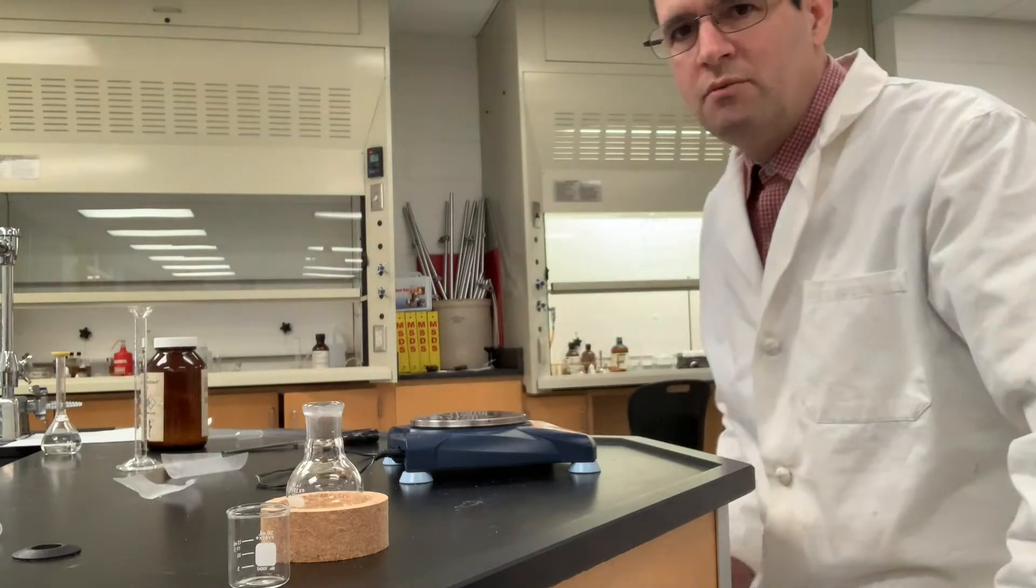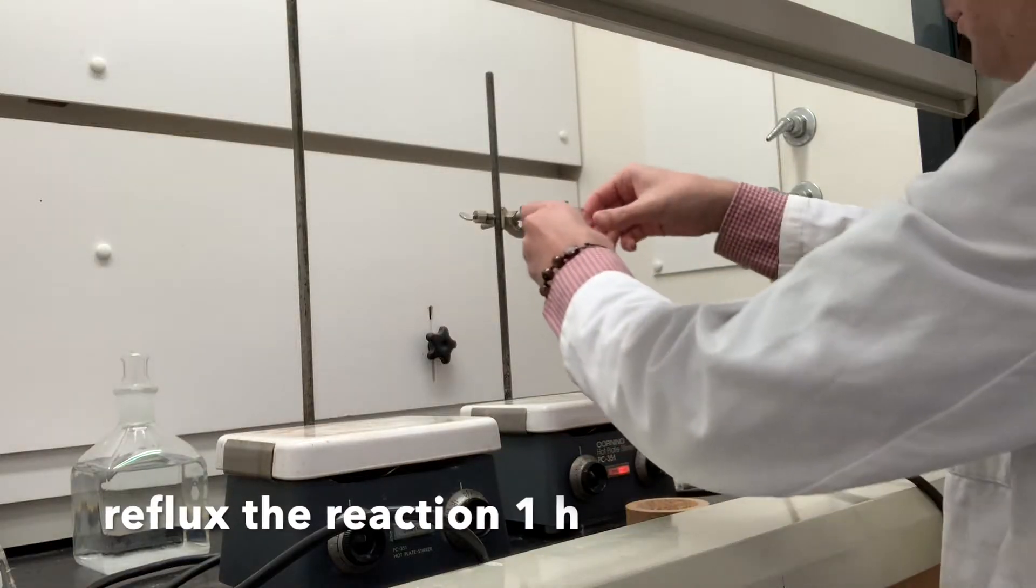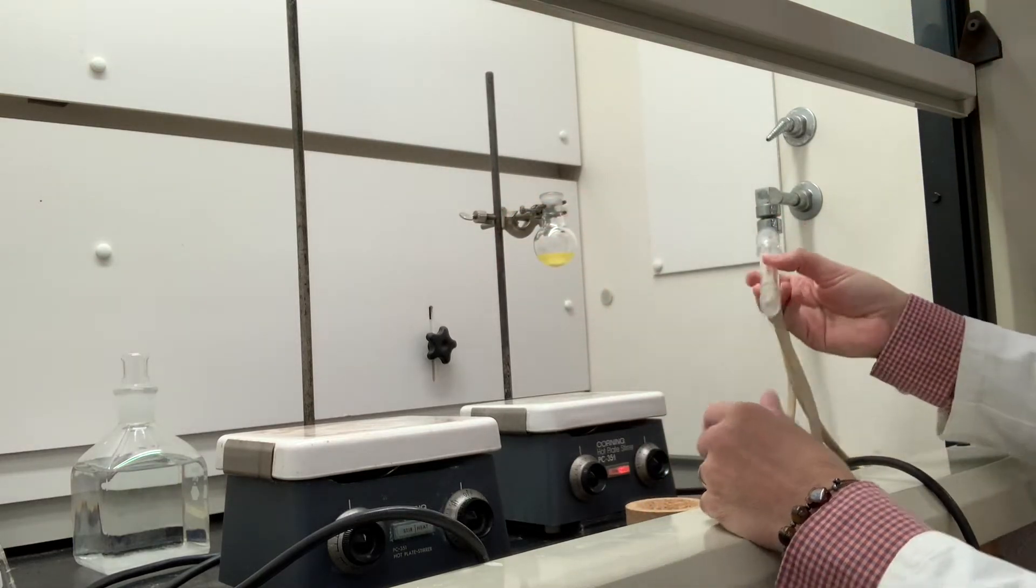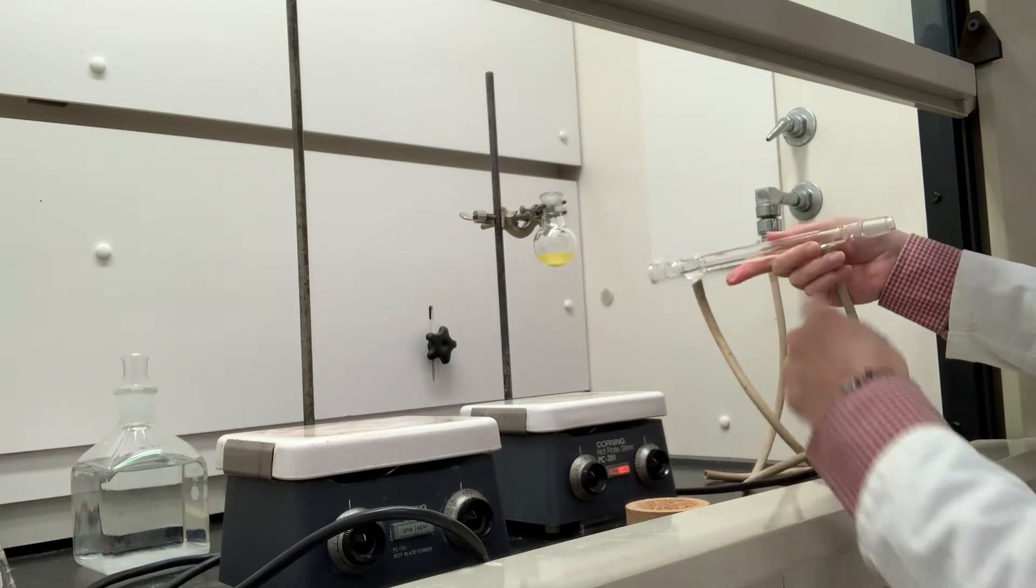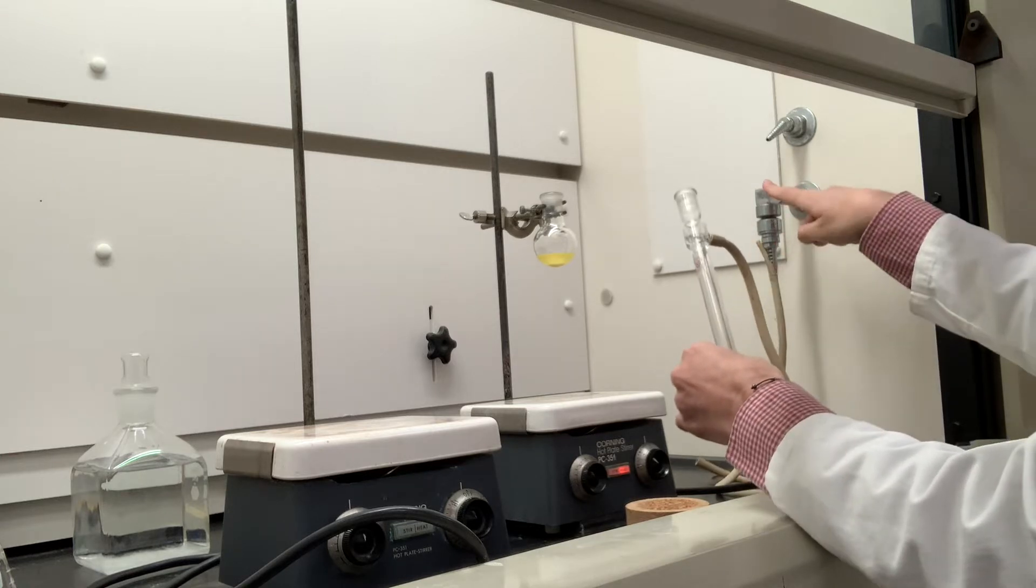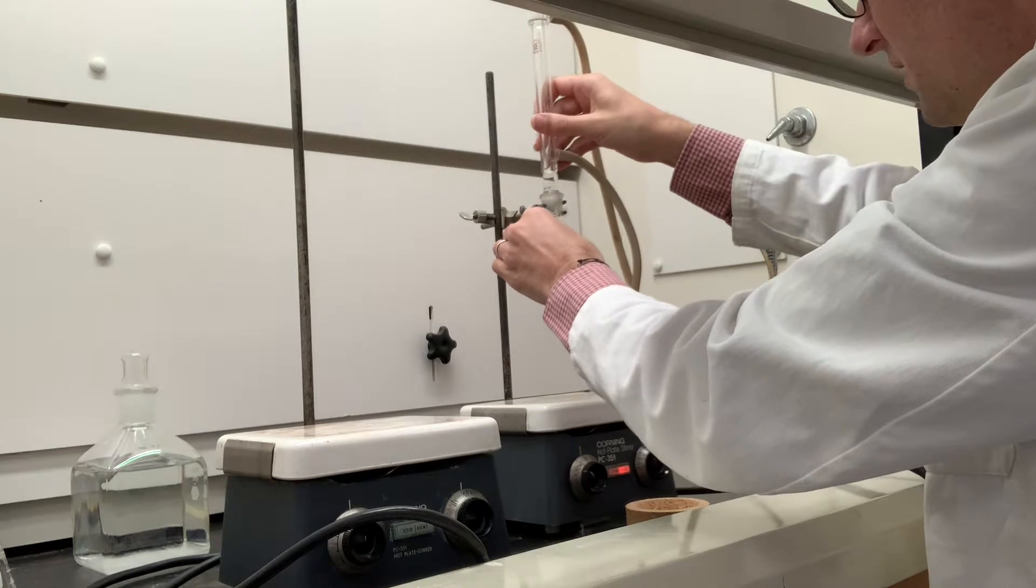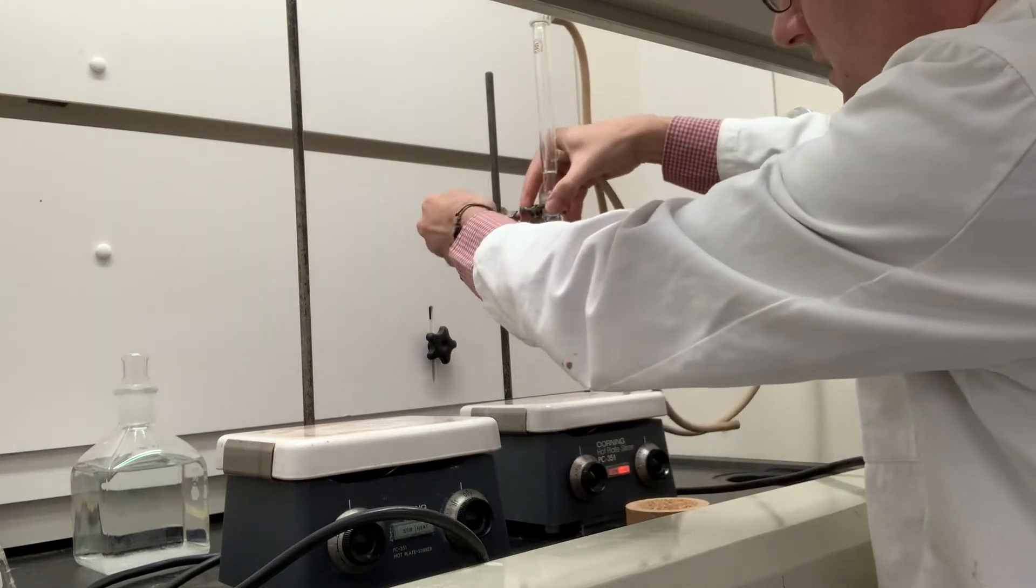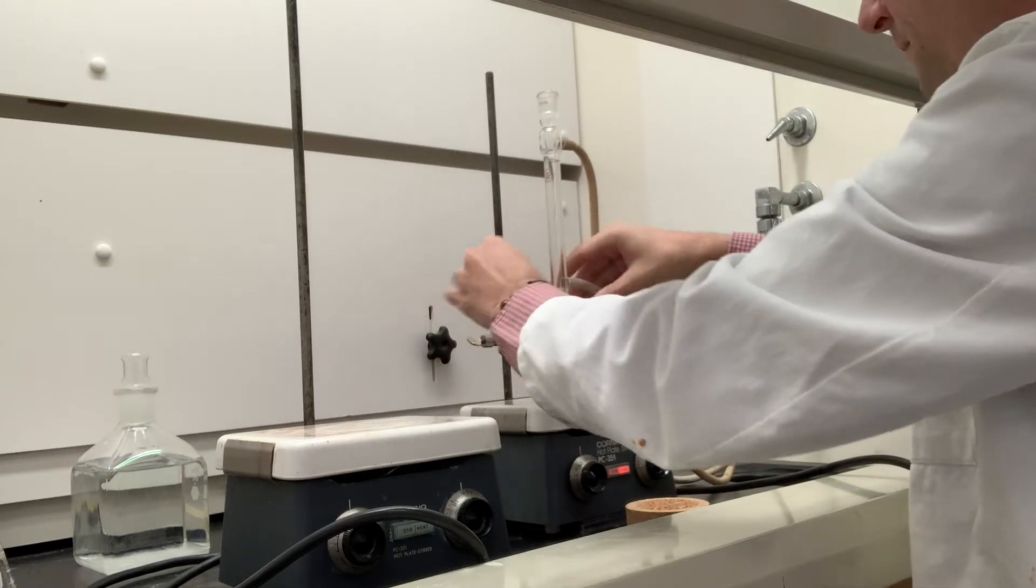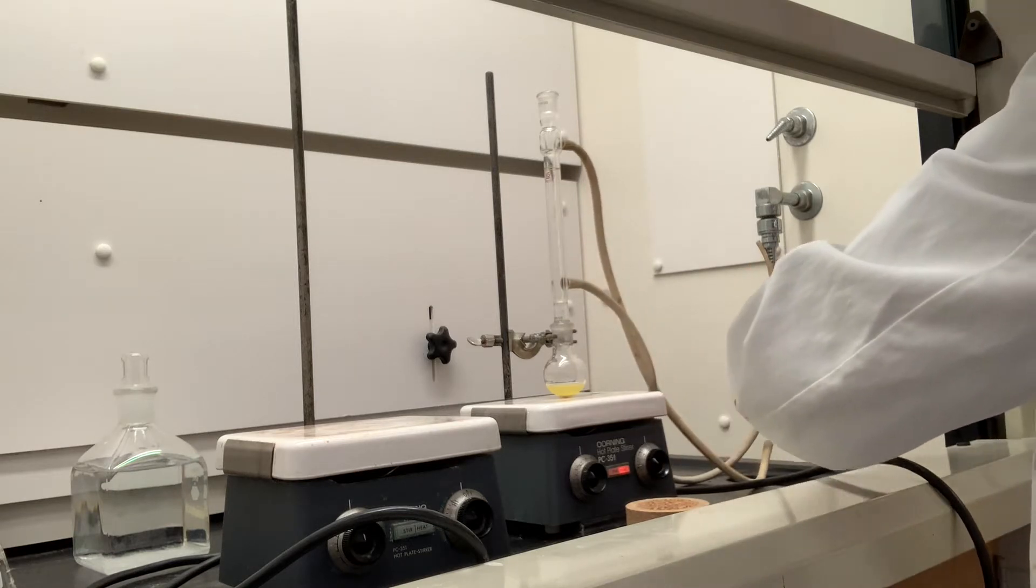Then we set this up in the fume hood behind me for reflux. Here's our fume hood. We want to clamp our flask above the hot plate and use a circulating water condenser. Here's our reflux condenser hooked up to the water on the right. We'll detach this and carefully bring it down to contact the hot plate. I will start the water circulating here.